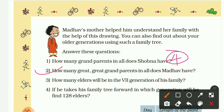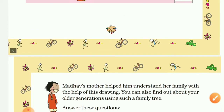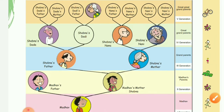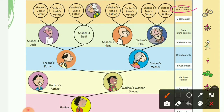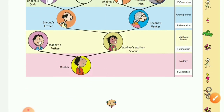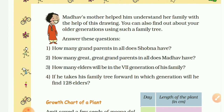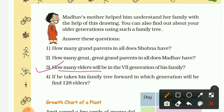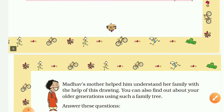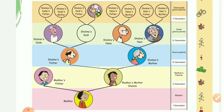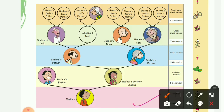Second question: how many great-great-grandparents in all does Madhav have? Here we have to find Madhav's great-great-grandparents, which are from the fifth generation. We can see that a total of eight elders are in the great-great-grandparents, from the fifth generation. Third question: how many elders will be in the seventh generation of his family? Let's try to understand it.